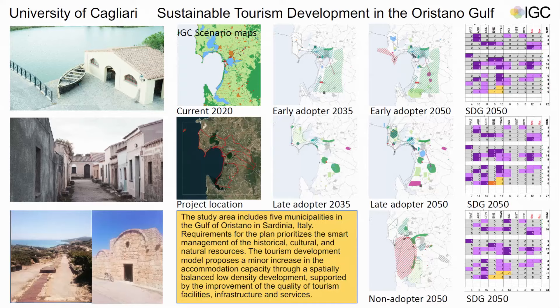The project we are presenting this year at the IGC falls within a broader project that we started unexpectedly last summer. We had the chance to present our previous geodesign work to the municipality of Oristano, and at that time they had an urgent need to understand how to spend a little money they got from the regional government to invest in sustainable tourism. We had basically four months to run the study and understand how to spend this money, but they also understood the potential of working more strategically and prospectively for the long term.